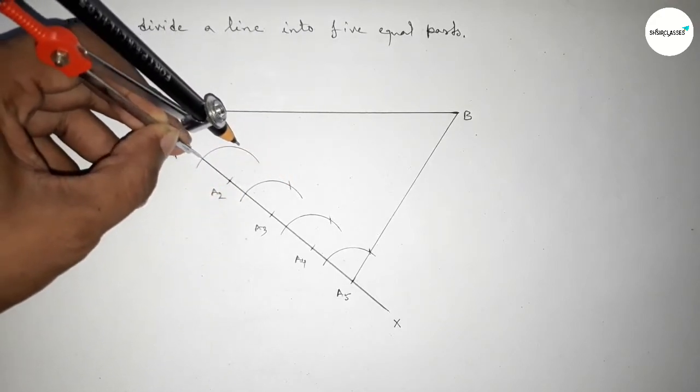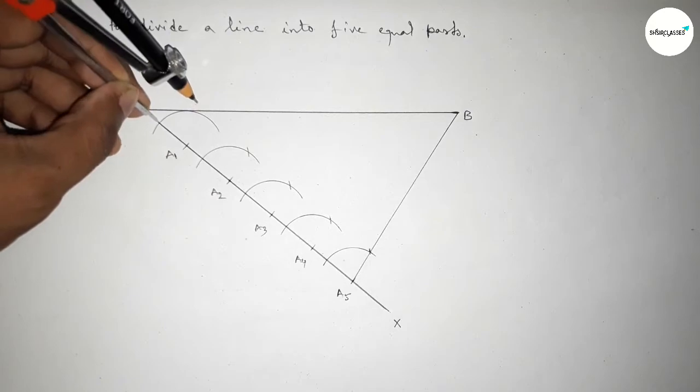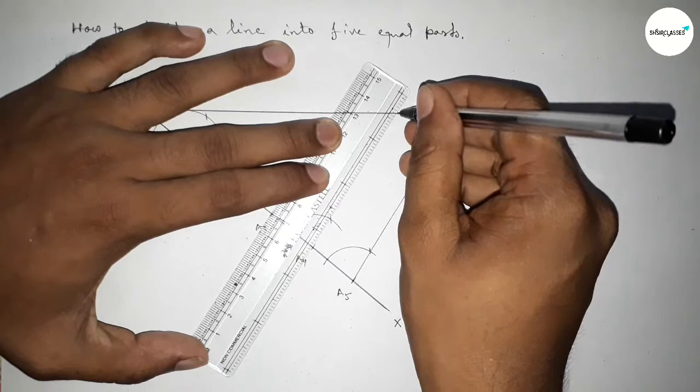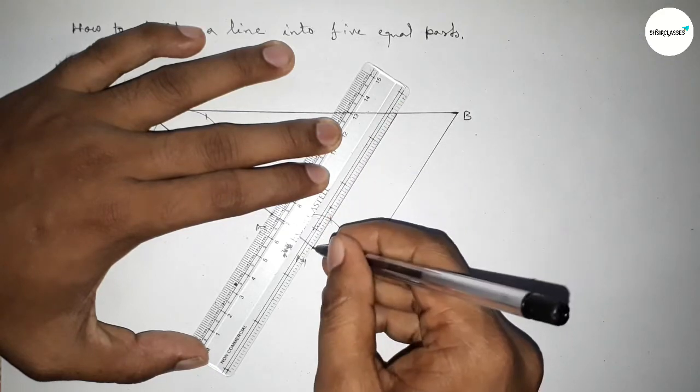Next, joining this line which is parallel to A5B. Similarly, joining all the straight lines, and all are parallel to A5B.